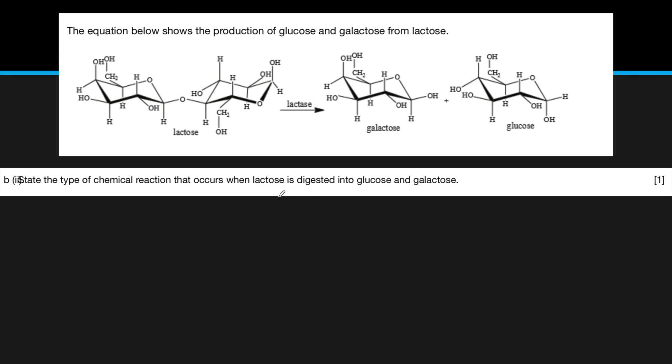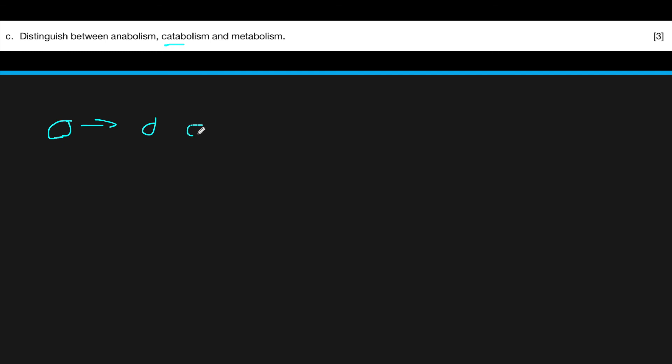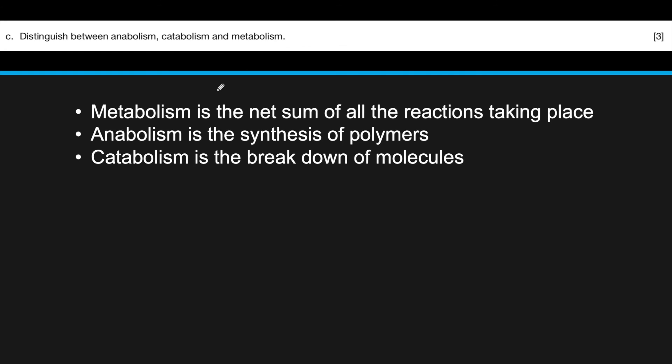Here's a free response question. The equation shows the production of glucose and galactose from lactose — going from one molecule to two, breaking down — so this is a catabolic reaction, or a hydrolysis reaction. The second question: distinguish between anabolism, catabolism, and metabolism. Catabolic is taking a molecule and breaking it down. Anabolic is the reverse reaction. And metabolism, as stated, is just the sum of all those reactions taking place.